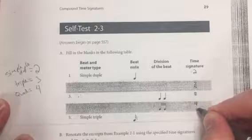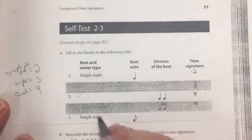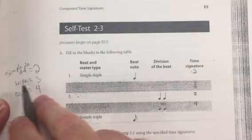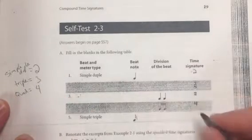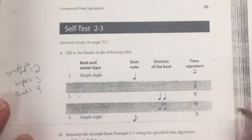We've got to figure out what the bottom number is. We'll get to that. Simple triple, we know that in simple triple the top number of the time signature is 3. So we're going to put a 3 here.